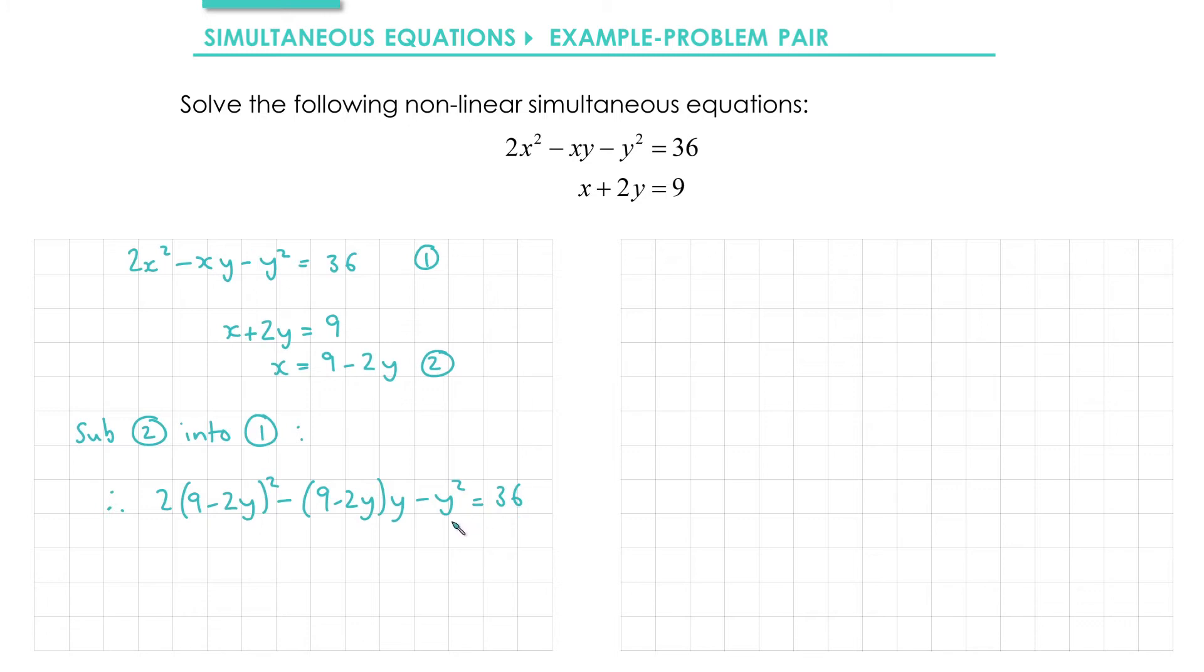From here, it's just a case of expanding and simplifying. We'll leave the 2 on the outside. We have a square bracket. Square the first term, we get 81. The product of the two terms in the bracket is negative 18, but we double that. So that's minus 36y. Then we square the second term, it's minus 2y, that gives us positive 4y².